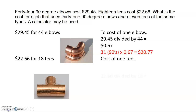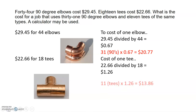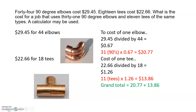Next we find the cost of one tee: $22.66 divided by 18 equals $1.26 per tee. We need 11 tees, so 11 times $1.26 equals $13.86 for the 11 tees. Adding it all up: $20.77 for the 31 elbows plus $13.86 for the 11 tees gives us a grand total of $34.63.